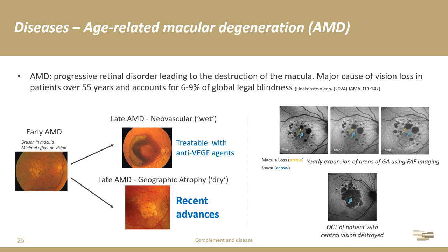We've been able to treat the wet form of AMD for a number of years with anti-VEGF agents, which have been very efficacious and easy to administer. Until recently there were absolutely no effective treatments for the dry form of the disease, although that has changed in the last 18 or so months. The progression of geographic atrophy is slow, and it is when it ingresses into the fovea — the central part of the retina — that real loss of central visual acuity begins and, if left long enough, will completely consume that central part of a patient's vision.